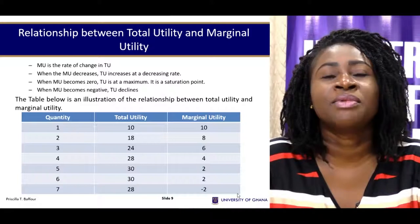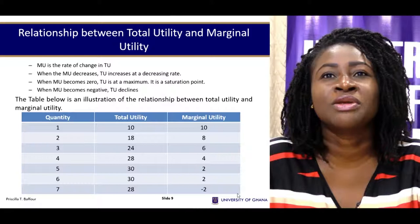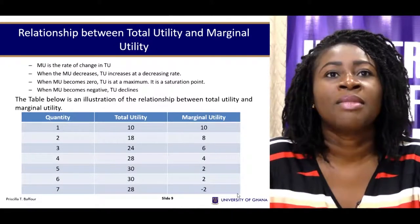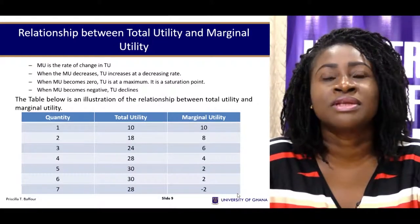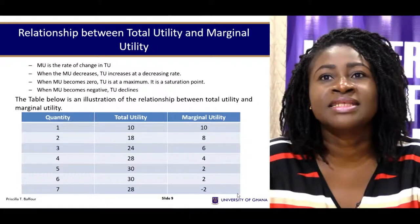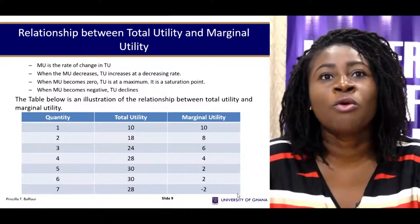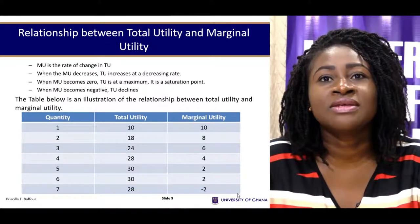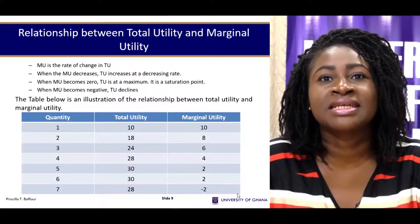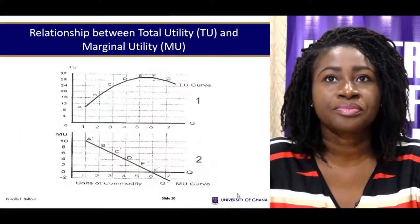Looking at this table: when the consumer has one unit of this commodity, total utility is 10 and marginal utility is 10. When they have two units, total utility increases to 18, but marginal utility is the difference — 18 minus 10 — which is 8. As you go on, total utility keeps adding up while marginal utility declines with further consumption of the good.